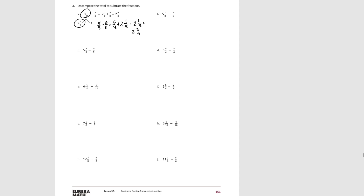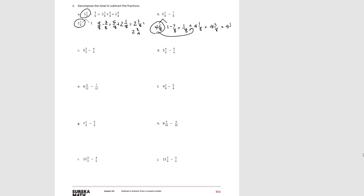Try B. For B, we decompose to show 4 and 1 eighth and 1. We rewrite 1 as 8 eighths. If we subtract 7 eighths, we end up with 1 eighth. Then 1 eighth plus 4 and 1 eighth equals 4 and 2 eighths, simplified to 4 and 1 fourth.